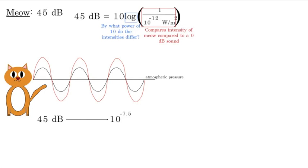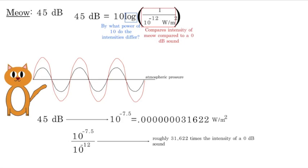So a 45 decibel sound corresponds with a 10 to the negative 7.5 intensity, which is this long decimal. So if we compare that to a zero decibel sound, then we find it's roughly 31,622 times the intensity of a zero decibel sound. And so 10 to the 4.5 is equal to that number. So then if we take that 4.5, multiply it by 10, that's how we get our 45 decibels.